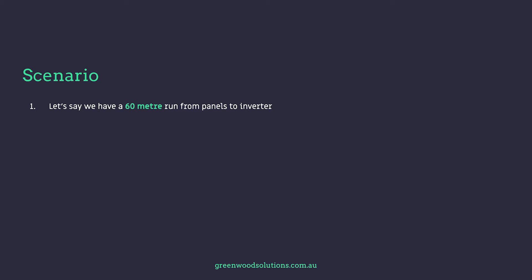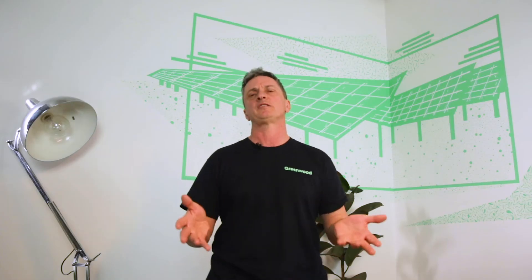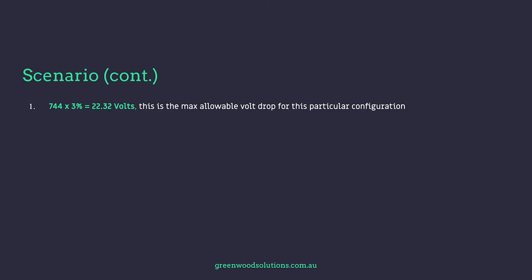Let's say we have a 60-metre run from panels to the inverter and we're using 19 panels in series. The total voltage at maximum power point of those 19 panels in series is 744 volts, and we have a 3% allowance on the Volt Drop. So how many volts have we got to play with? You take 744 volts at maximum power point, multiply by 3%, and it comes out to around 22 volts.